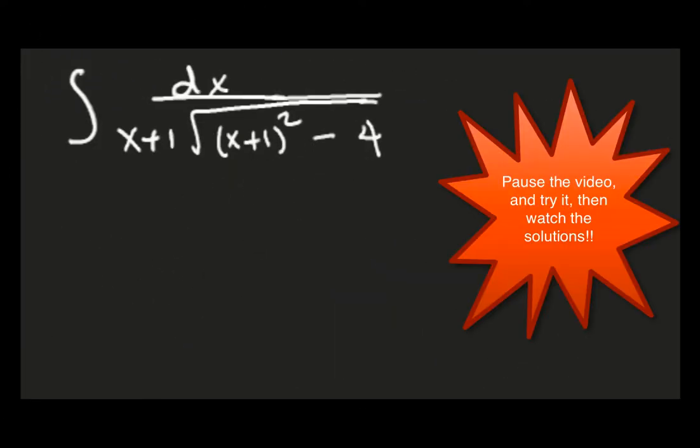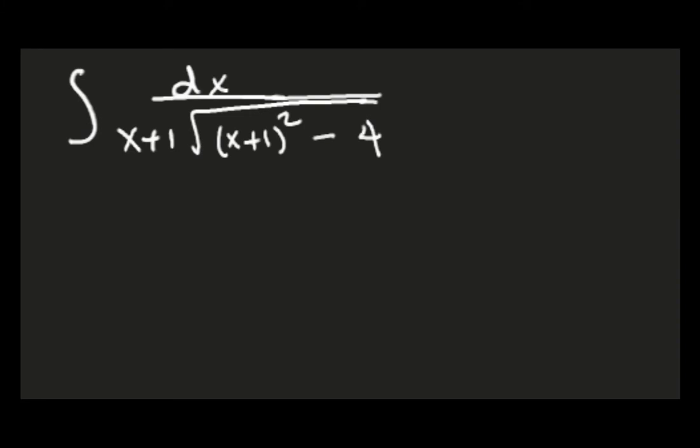Any ideas? Don't let it intimidate you. All we have here is a box and then the box squared minus a squared. That's an arc secant.